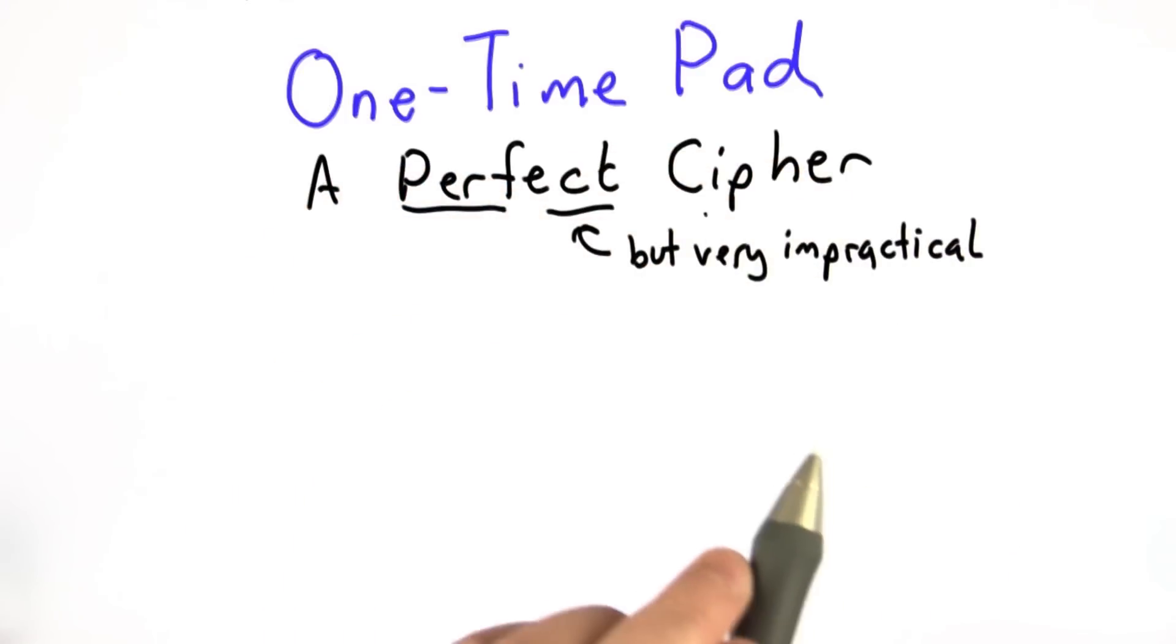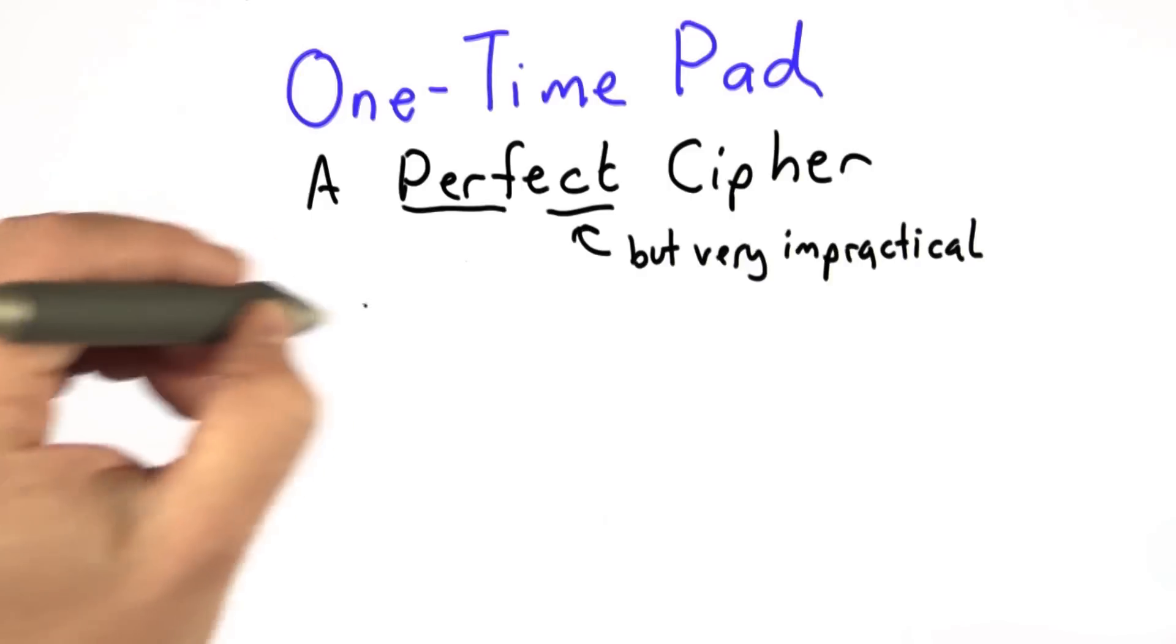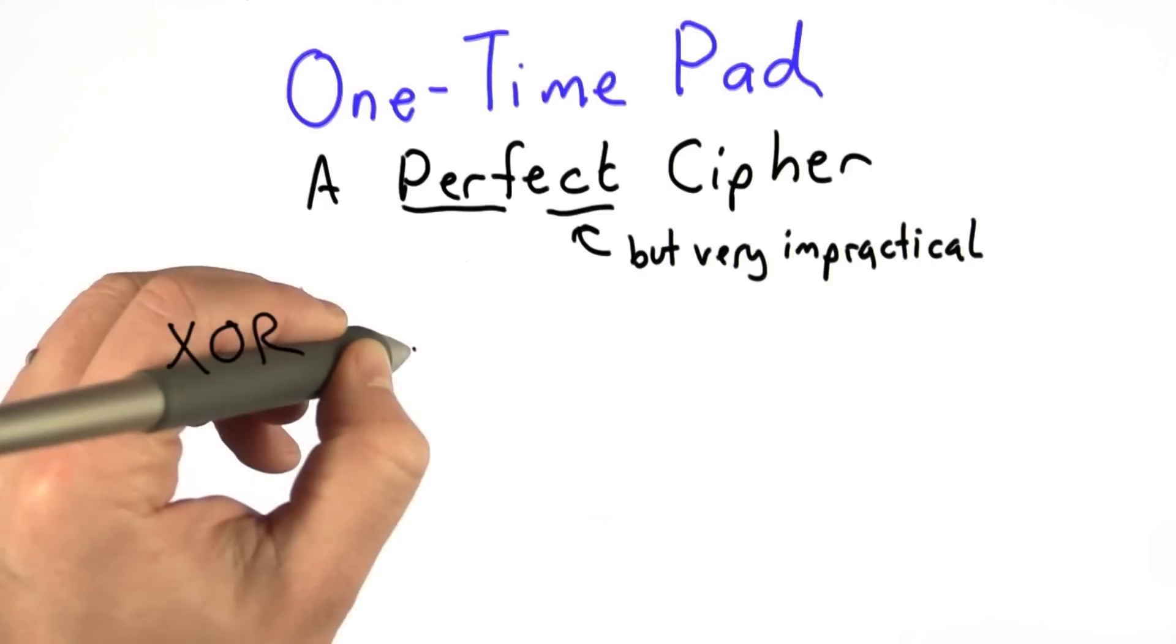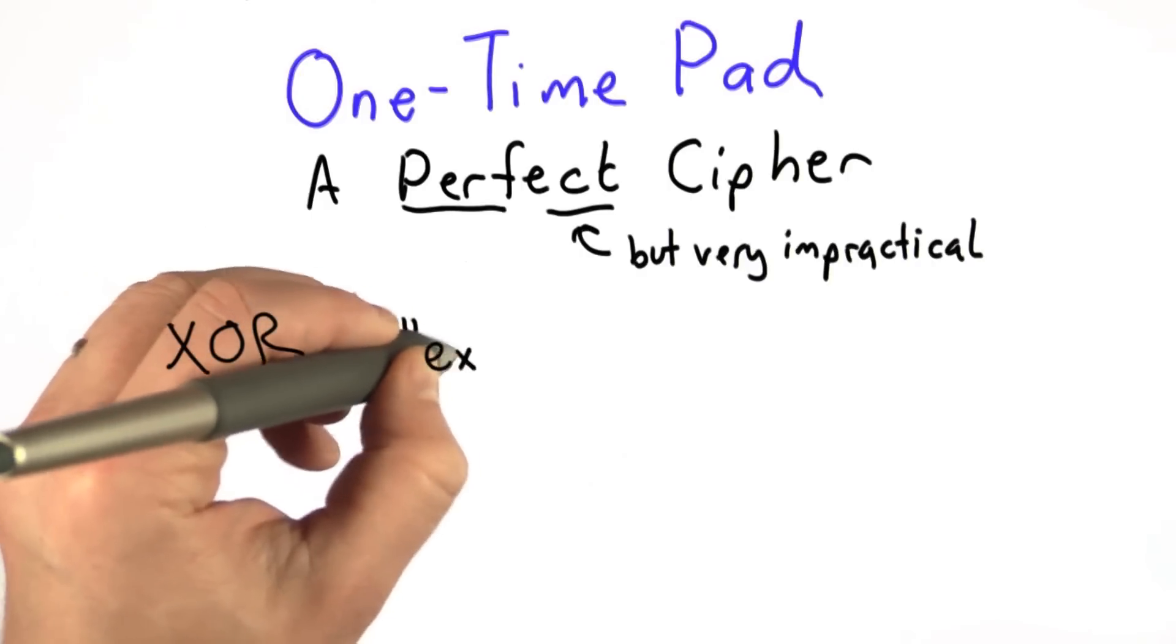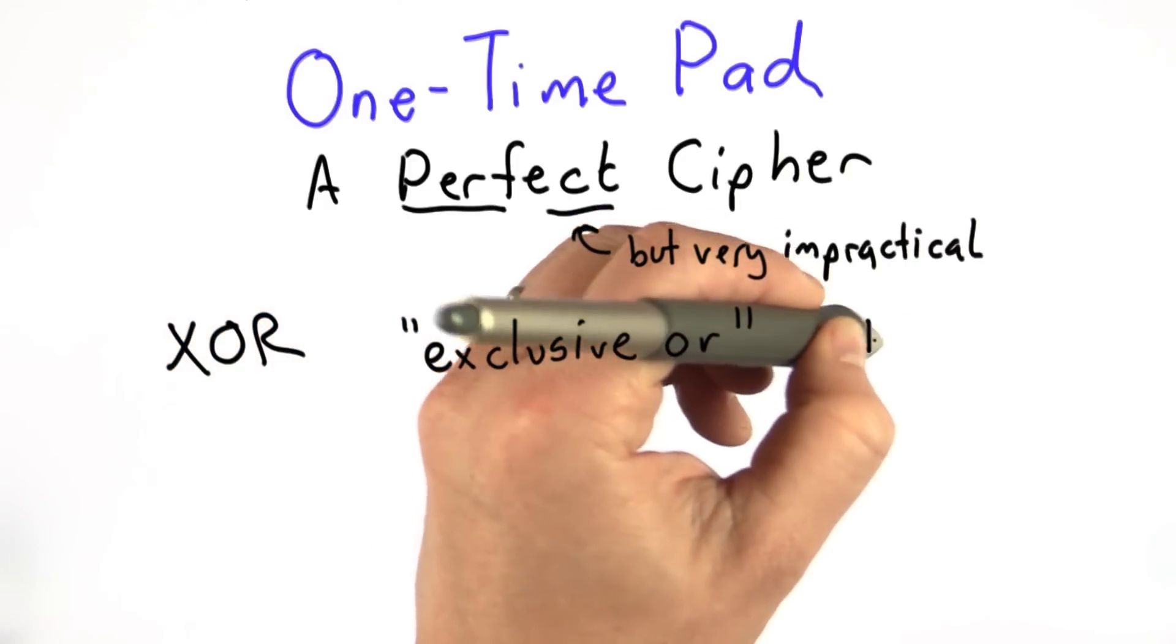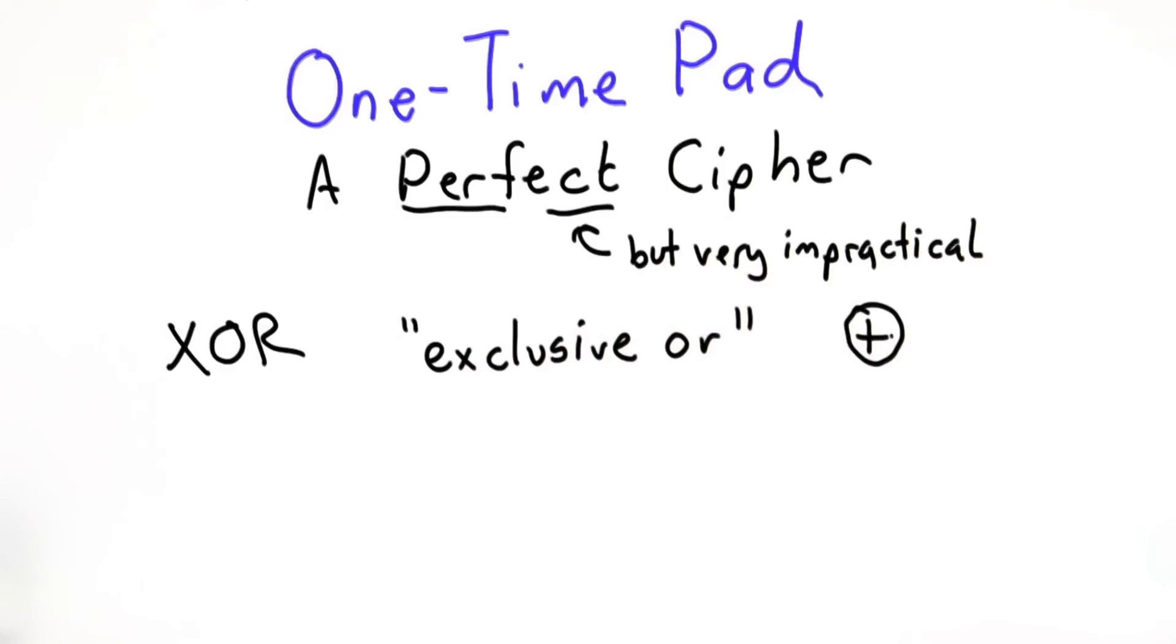The reason it's very impractical is because it requires huge keys. So to understand the one-time pad, the first thing we need to understand is the XOR function, which is a name for the exclusive or. And it's often written as a plus with a circle around it.